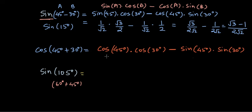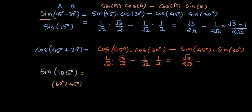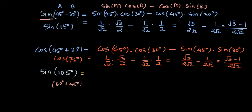So: cos(45°) × cos(30°) minus sin(45°) × sin(30°) = (1/√2)(√3/2) minus (1/√2)(1/2) = (√3 − 1)/(2√2). So cos of 75 degrees equals sine of 15 degrees.